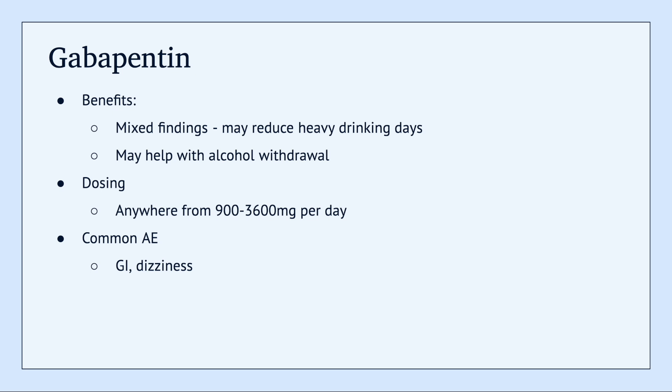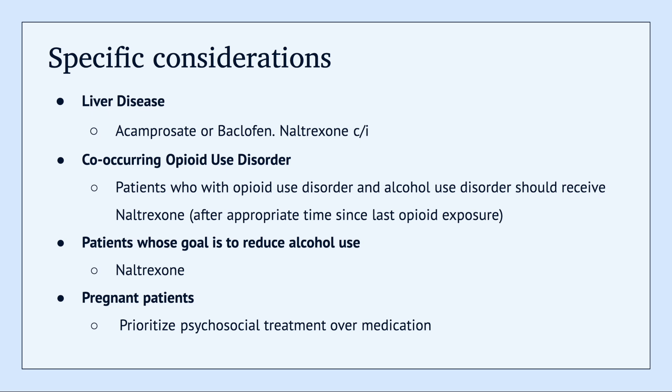Some things to consider when determining the best medication for a patient with alcohol use disorder: if a patient has liver disease, you can try acamprosate — baclofen is another medication that has shown some success as well — and naltrexone would be contraindicated in these patients. If a patient has alcohol use disorder with a co-occurring opioid use disorder, these patients can get naltrexone but you want to make sure there's an appropriate time since their last opioid exposure — you do not want to give naltrexone while they are actively using opioids. If a patient is interested in reducing alcohol use but not fully stopping it, then give them naltrexone. In pregnant patients, you typically do not want to rely too much on medications, and you want to try and manage their alcohol use disorder with psychosocial treatments, counseling, and things along that line.